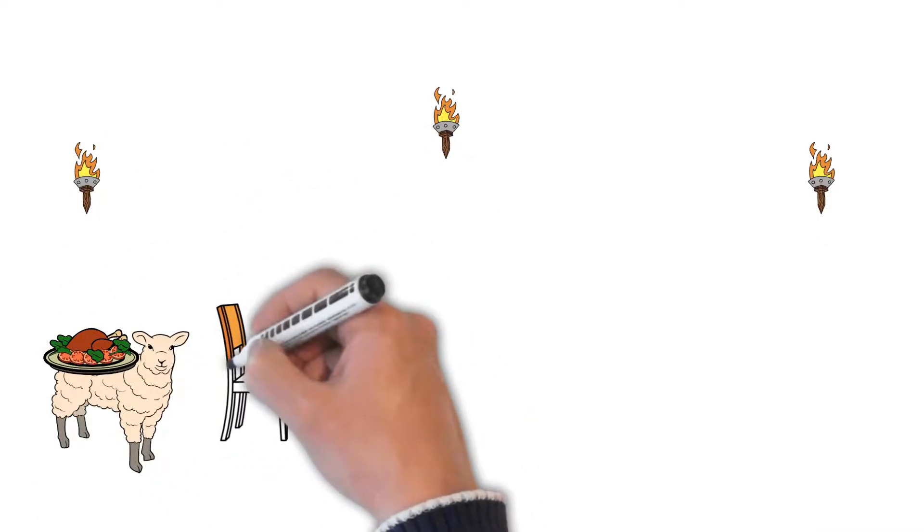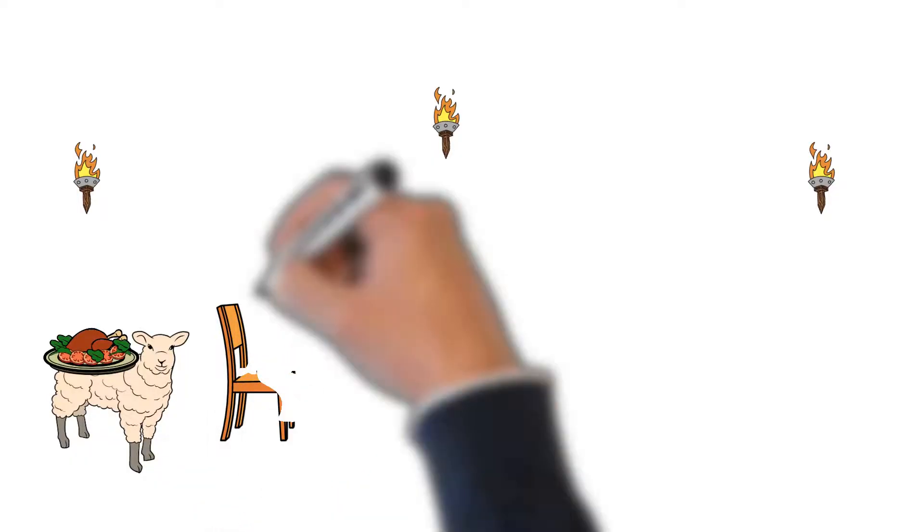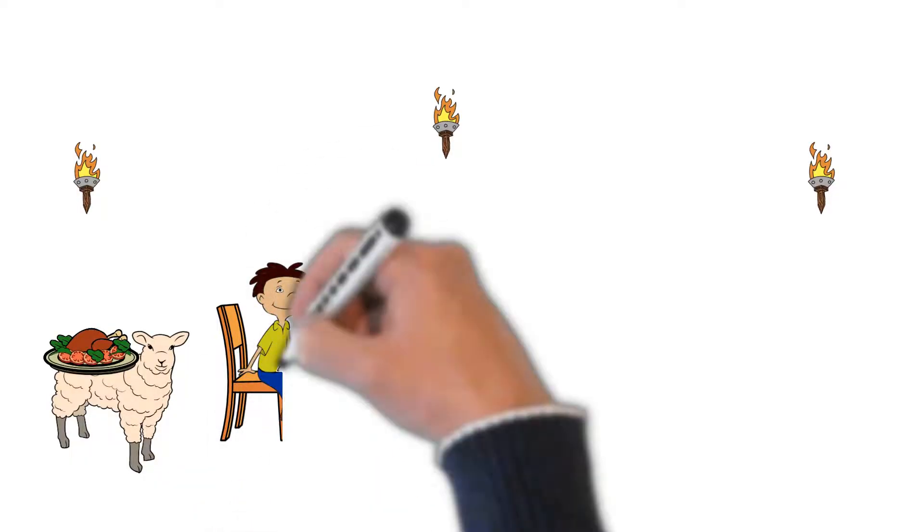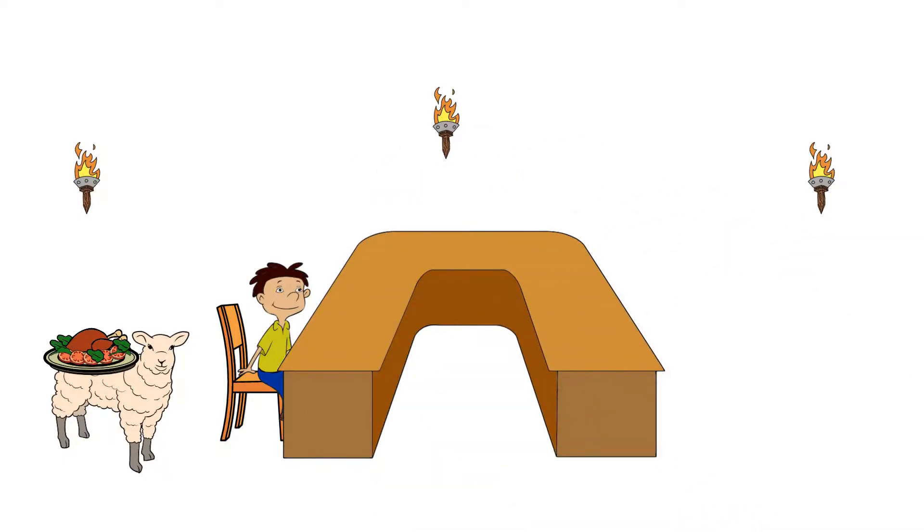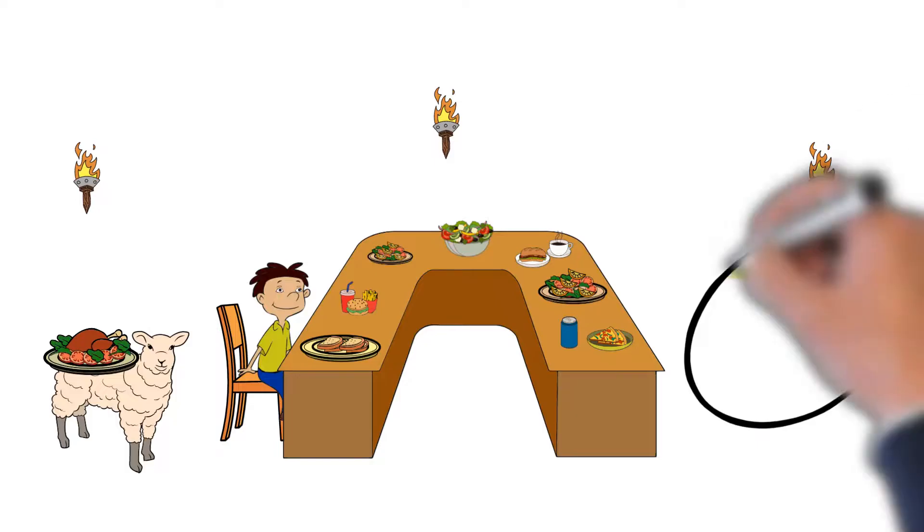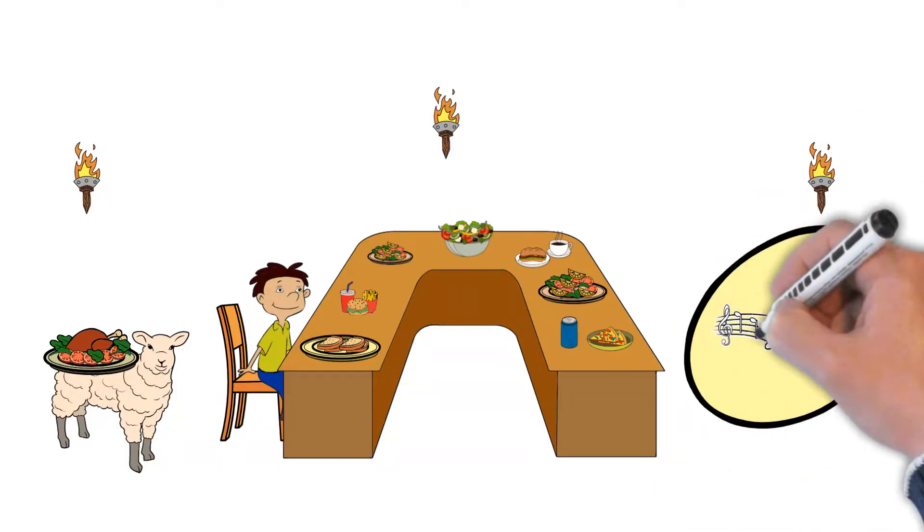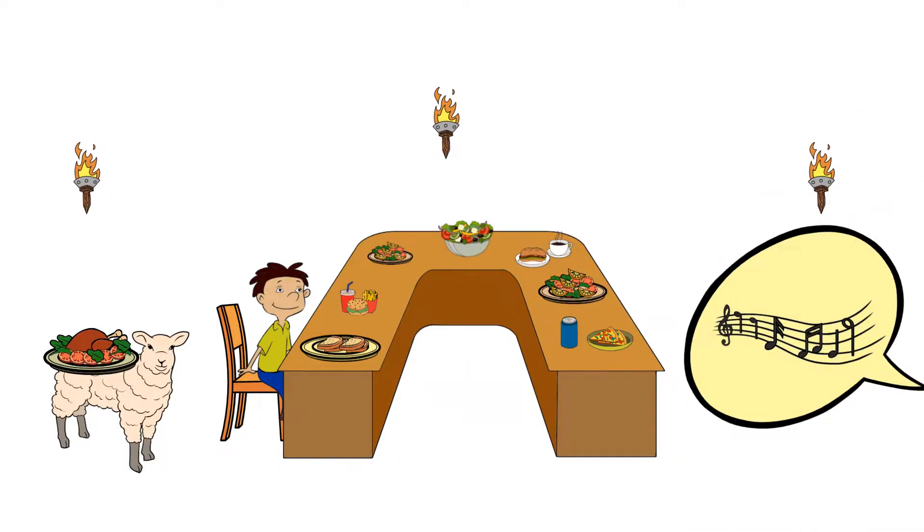Beorn shared tales of the dangers that lay ahead in the forest of Mirkwood, which the dwarves must navigate to reach the dragon's stronghold. As they dined and drank mead, the night grew darker, and the dwarves began to tell their own tales. Bilbo nodded off to sleep, and later awoke to find Beorn gone, but the dwarves continued singing late into the night.